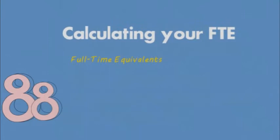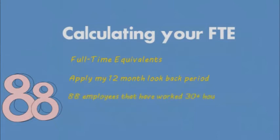Let's take a look at an example. To calculate my FTE, the first thing I'm going to do is review all the hours of my employees over my previous 12-month look-back period. Going back over the last 12 months, I see that I have 88 employees that have been working 30 or more hours per week. With this knowledge, I can say that I have 88 full-time employees.